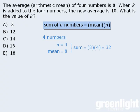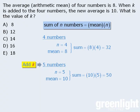Now let's see what happens when we add k to those four numbers. When we add k, we now have five numbers, so n is equal to 5, and we are told that the average of those five numbers is 10. So the sum of the five numbers will be 10 times 5, which is 50.